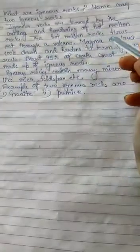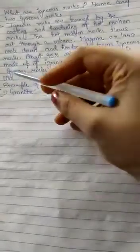The hot molten rocks flow out through a volcano. The molten rocks come out from the earth through a volcano. Magma or lava cools down and hardens to form igneous rock. Whether it is magma or lava, when it cools down and becomes hard, they form igneous rock. About 95% of the earth's crust is made of igneous rock. The base of the earth is made of igneous rock. Around 95% of the earth's crust is made of igneous rock.